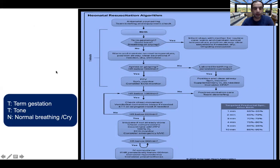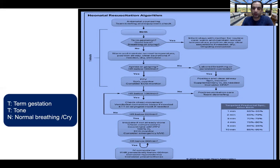The three questions asked at birth can be remembered by the mnemonic TTN: whether the baby is term gestation, whether the baby has good tone, and whether there is normal breathing or crying. If the answer to all three questions is yes, the baby goes to the mother for skin-to-skin contact and is monitored for temperature, color, and breathing. If the answer to any one of these is no, the baby must be taken to the resuscitation corner.